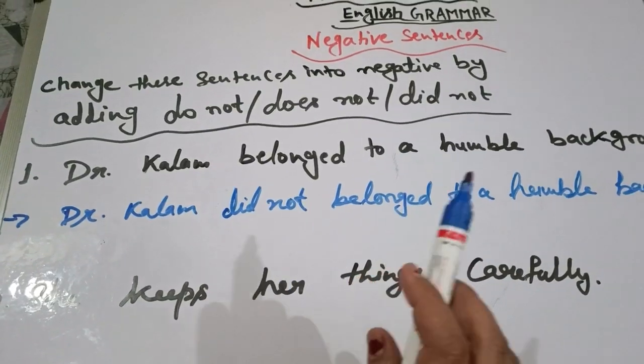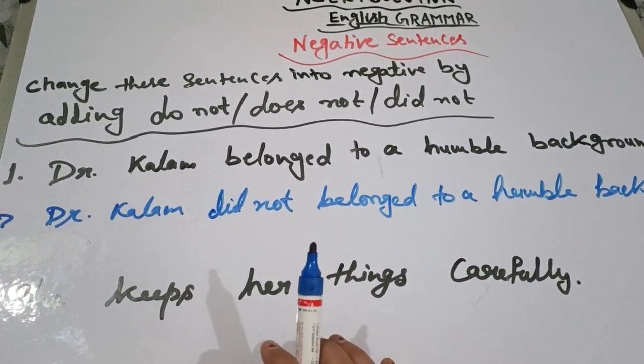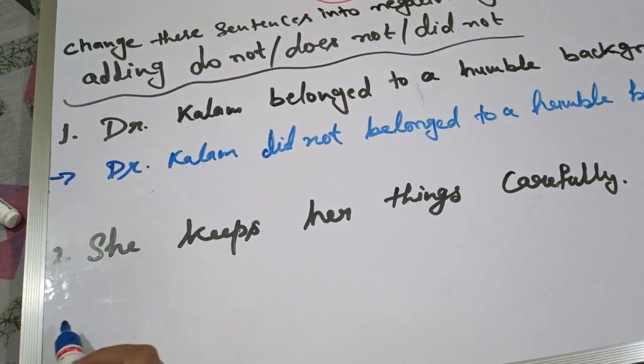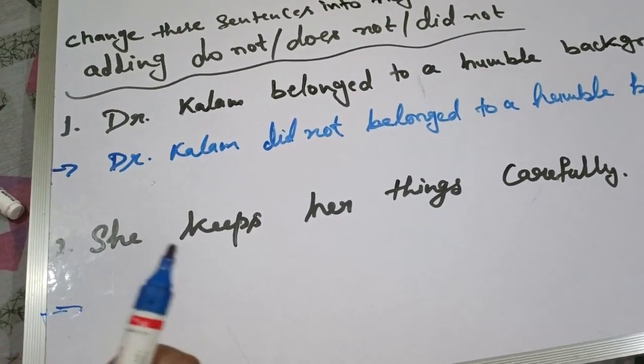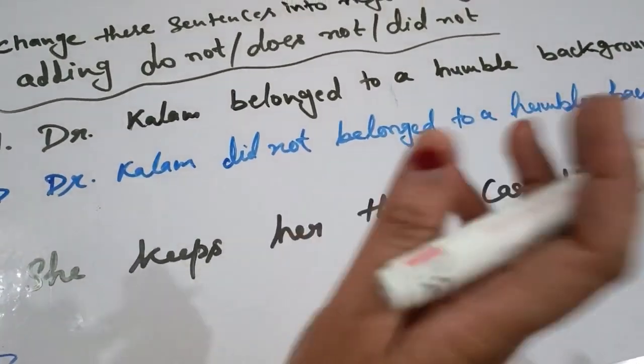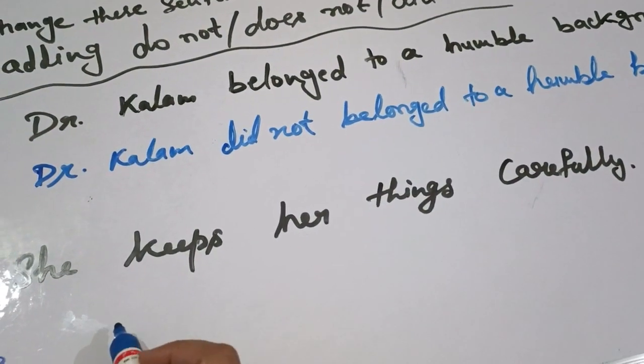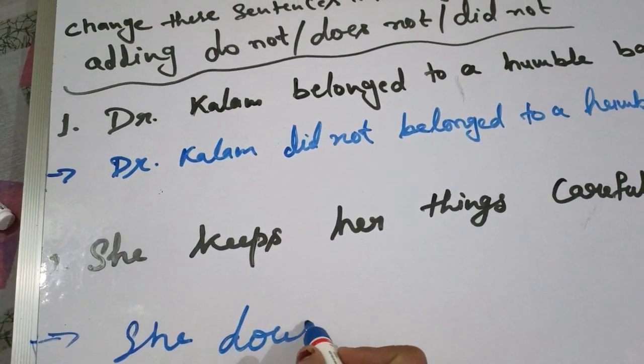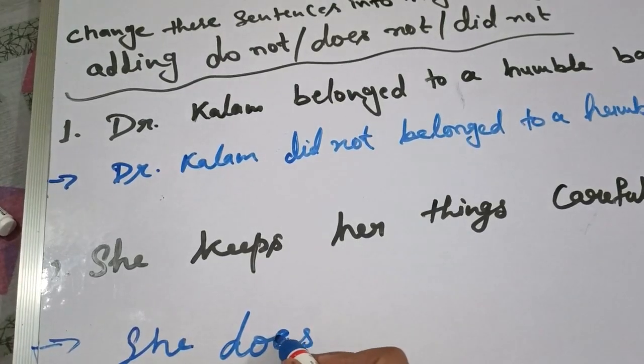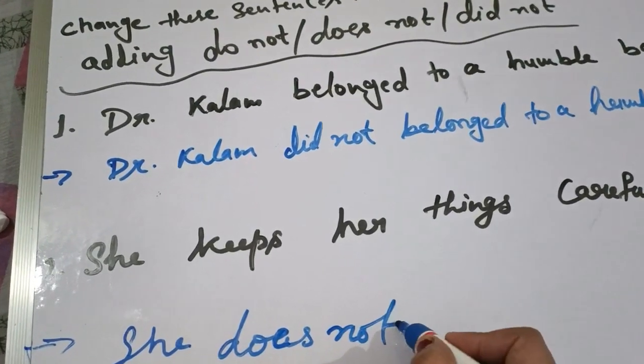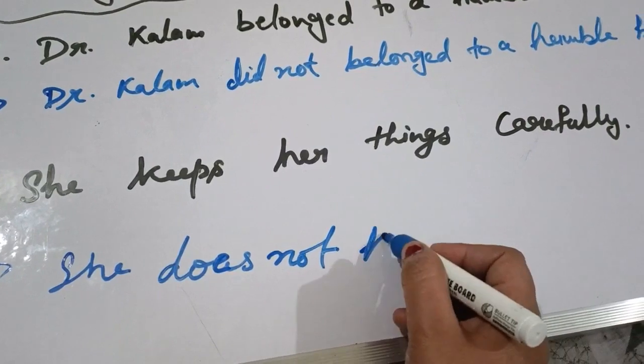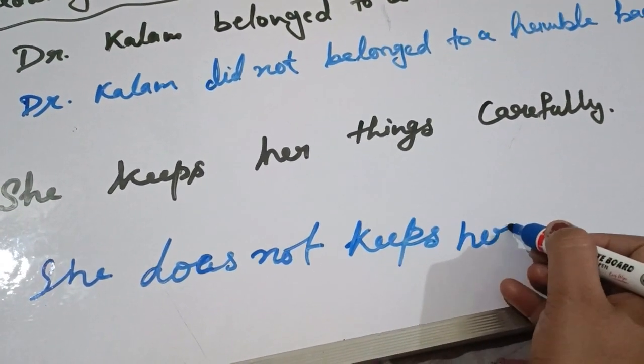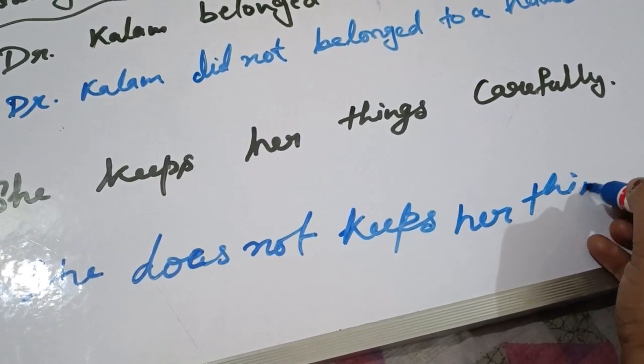Dr. Kalam did not belong to a humble background. Second, what is C? She keeps her things carefully. After that, see what will be C. C does not keeps her things.